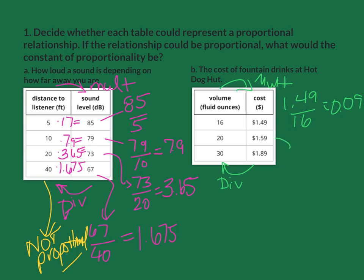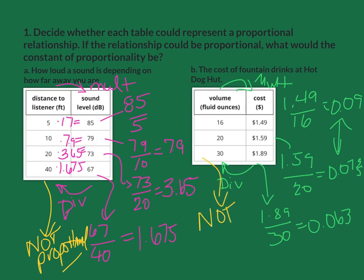The next one would be $1.59 divided by 20. I can use my calculator, and that's going to be 0.0795. We can already see they aren't the same. Just to double check, 1.89 divided by 30 is 0.063. So this one is also not proportional.